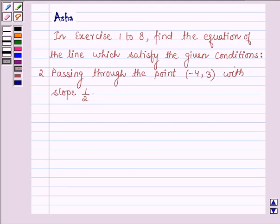Hello and welcome to the session. In exercise 1 to 8, find the equation of the line which satisfies the given condition: passing through the point (-4, 3) with slope 1/2.